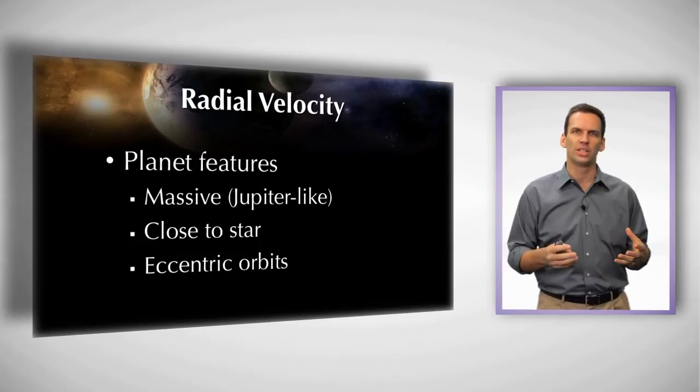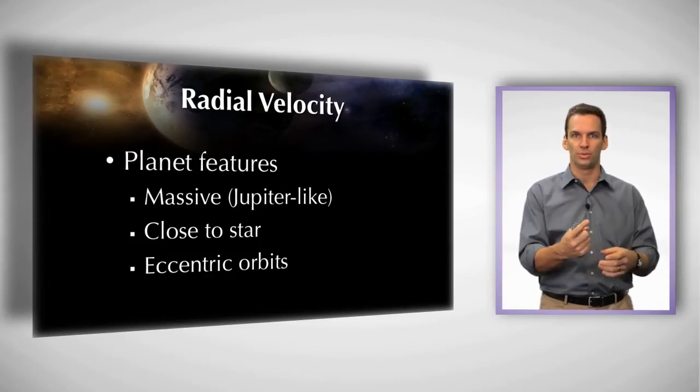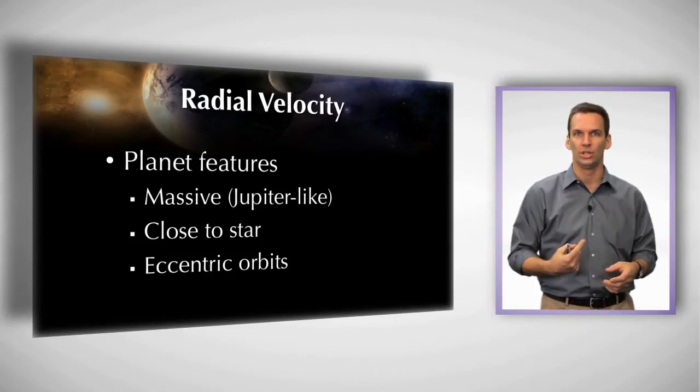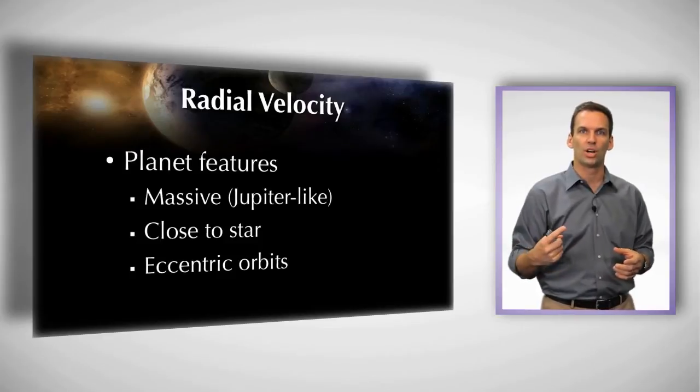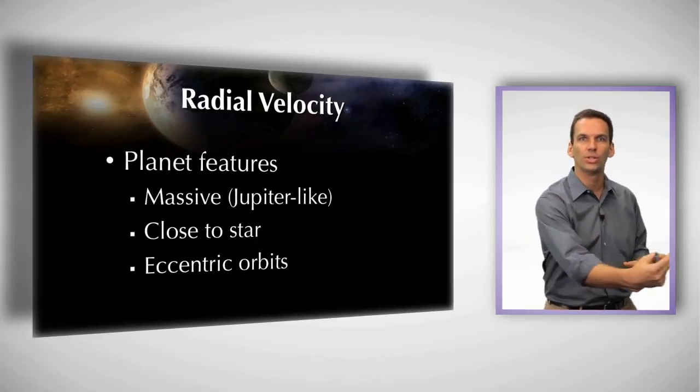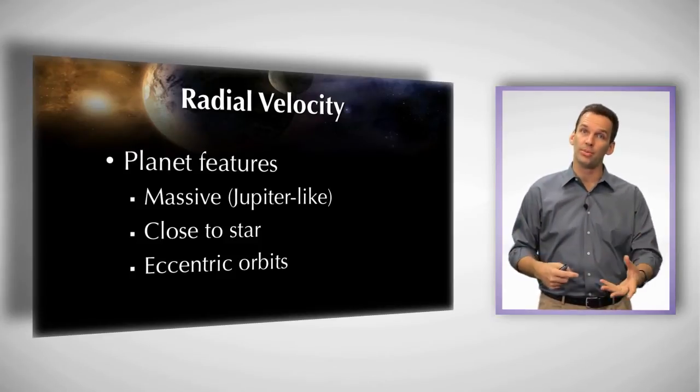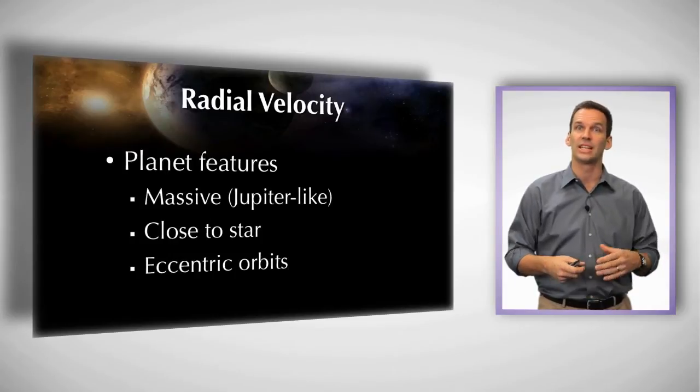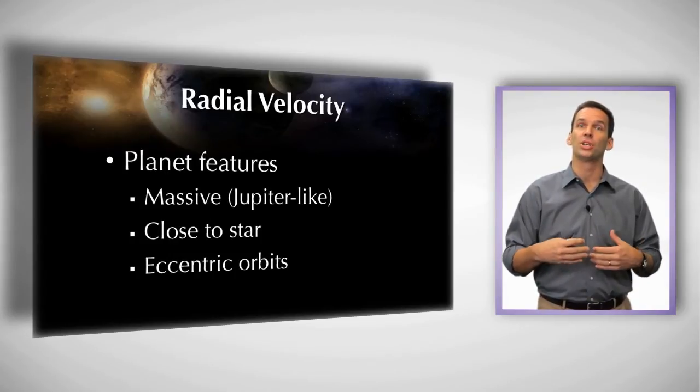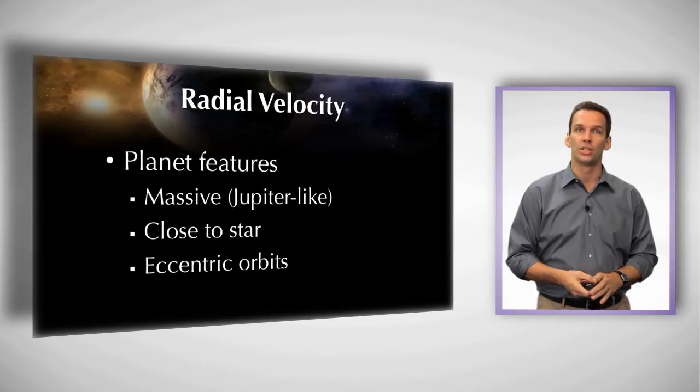And they're going to be more sensitive to eccentric orbits. Jupiter orbits more or less in a circle. But as planets that orbit where they get close to their star and further away, it's also going to be more sensitive to those kinds of planets, because it causes a greater influence on the star's motion.